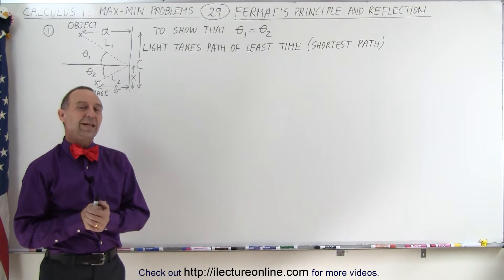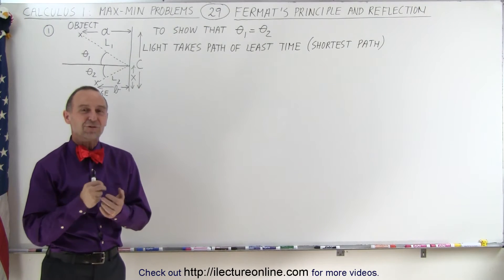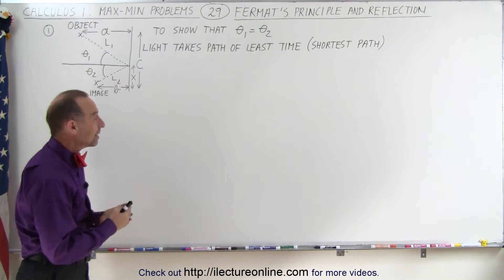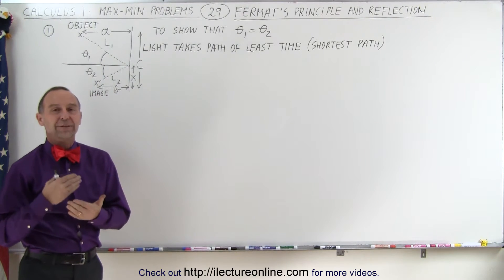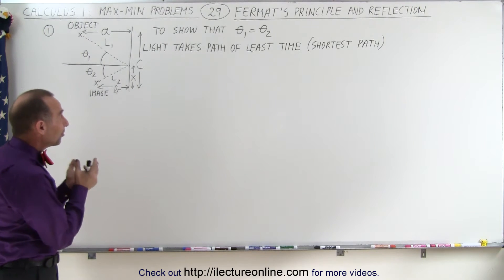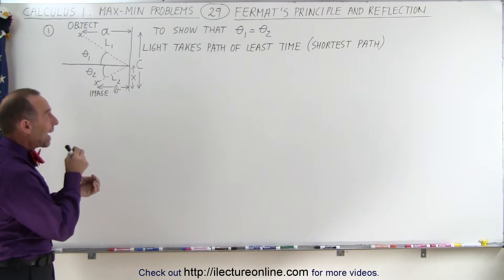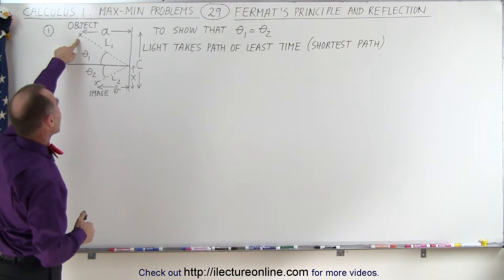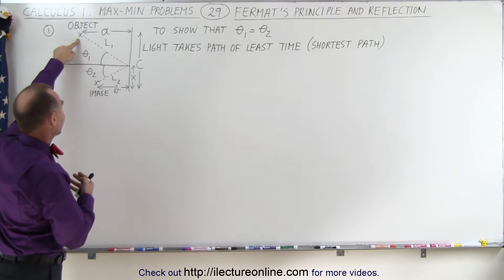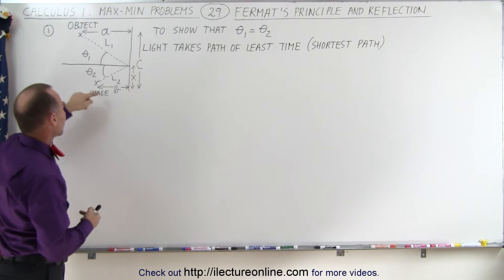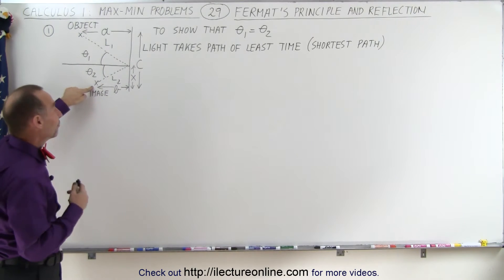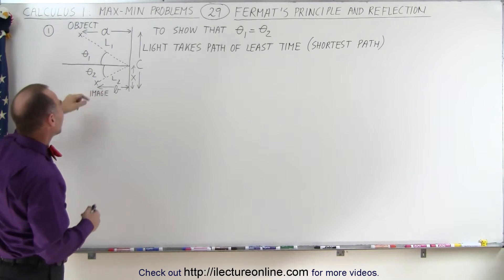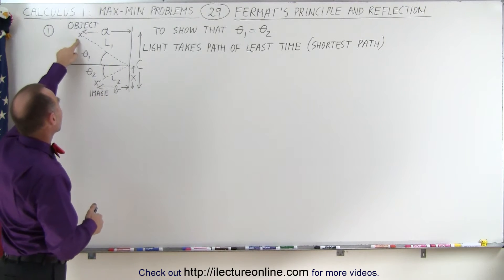Welcome to ElectronLine. One of the most interesting applications of max-min problems has to be the principle of Fermat. The principle states that light will take the path of least time. If there's an object here that reflects light, and it's being reflected by a mirror, and here an image is being formed, then the path that light will take will take the least amount of time to get from there to there.